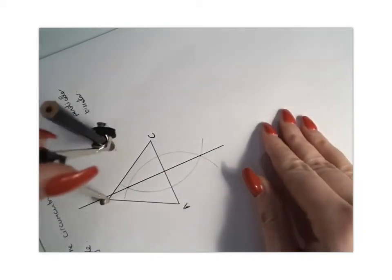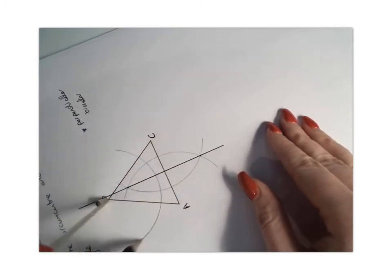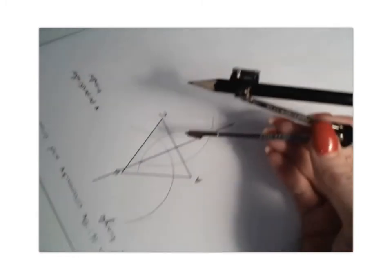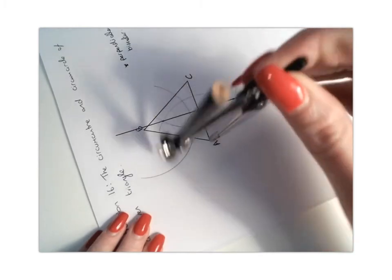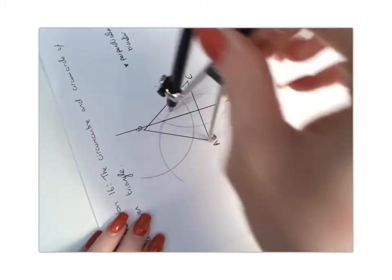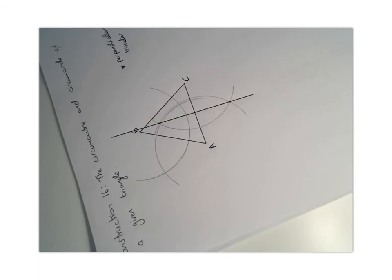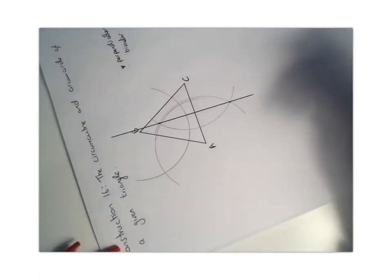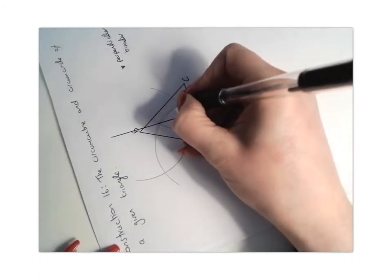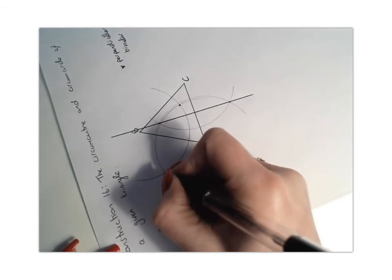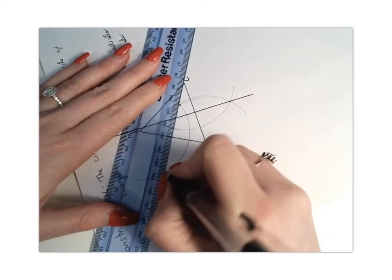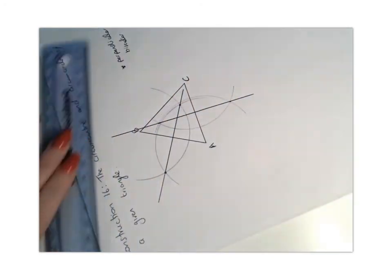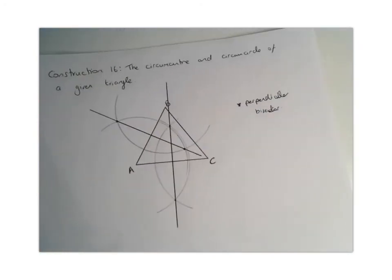I'm going to draw my semicircle and do the same thing here at A. Make sure you're taking special note of where they intersect each other so you don't get confused. There and there. We're then going to get our ruler and join those two together to form the other perpendicular bisector.